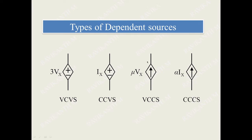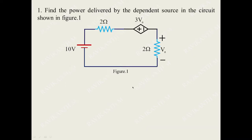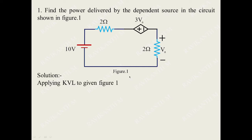These are the typical examples of the different types of dependent sources that we see practically in electrical circuits and networks. Let us start with the first problem: find the power delivered by the dependent source, which is a voltage controlled voltage source, in figure 1. We are going to apply KVL to the given figure.